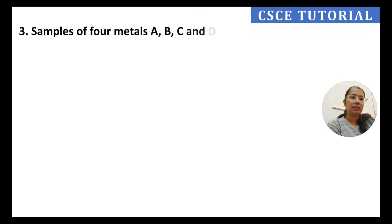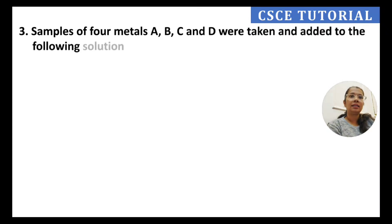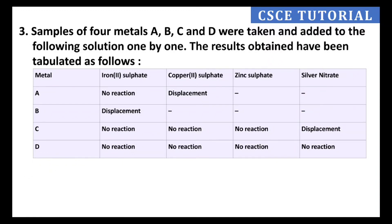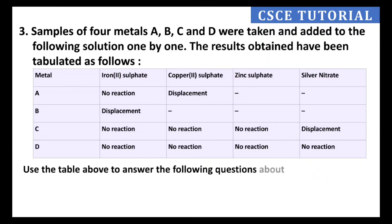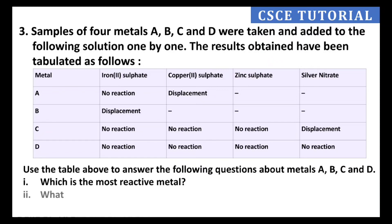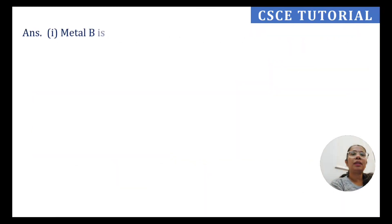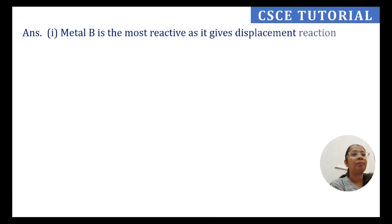From the table of results for metals A, B, C, D: you are asked which is the most reactive metal, what you observe when B is added to copper sulphate solution, and to arrange the reactivity series in decreasing order. Metal B is the most reactive as it gives a displacement reaction with iron sulphate solution.